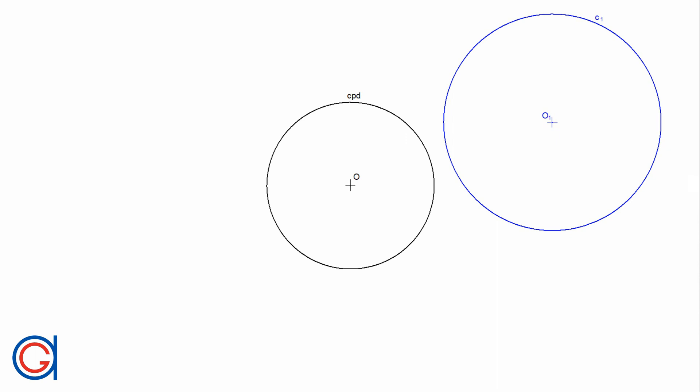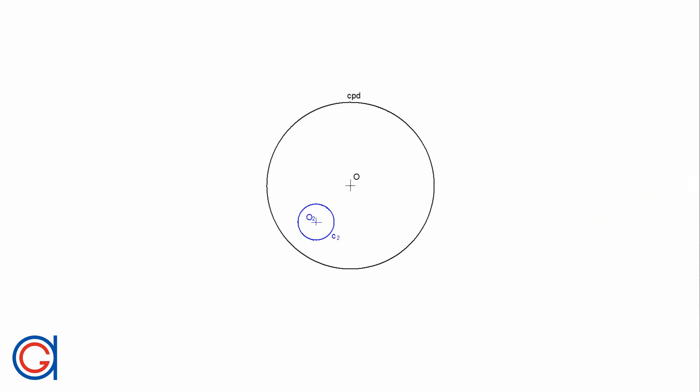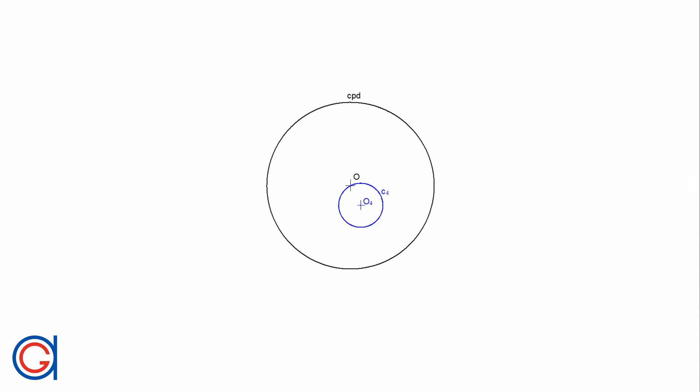The first one, circumference C1, is located outside the reference circle, named CPD. The second one, C2, is located inside the reference circle and its circumference doesn't pass through the origin. The third one, circumference C3, intersects with the reference circle and its circumference also doesn't pass through the origin. The fourth one, C4, is located inside the reference circle and its circumference does pass through the origin. And the fifth one, C5, intersects with the reference circle and its circumference does pass through the origin.